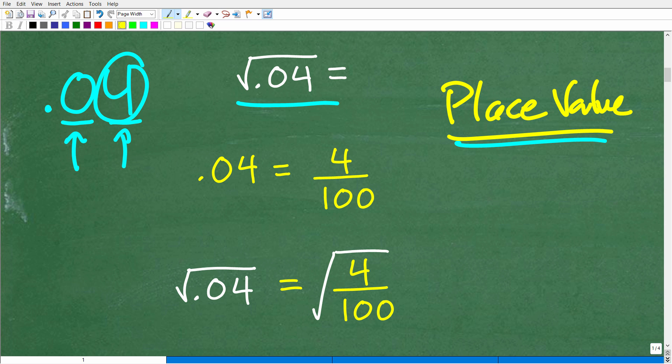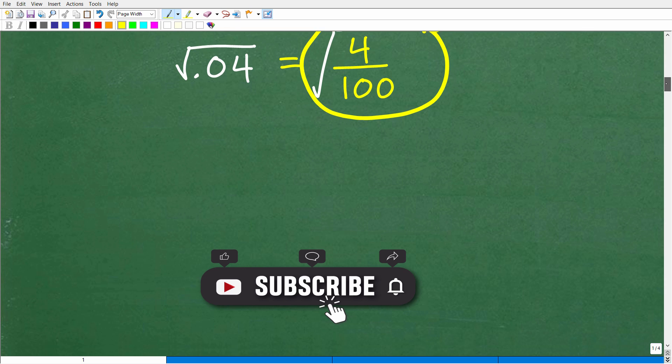Now, the question is we want to take the square root of 0.04 or 4 hundredths. All right, so how do we do that? Well, we just simply take the square root of this. So the square root of 0.04, is going to be equal to us taking the square root of 4 hundredths. Okay, so the square root of 0.04 is the same thing, the same value as the square root of 4 over 100.